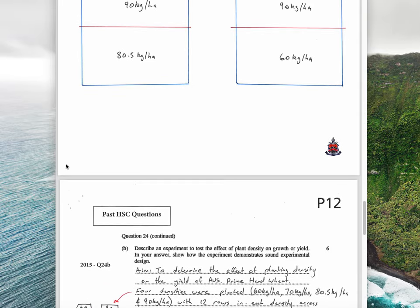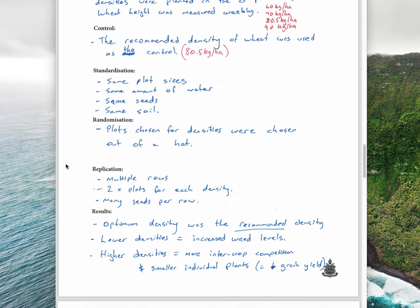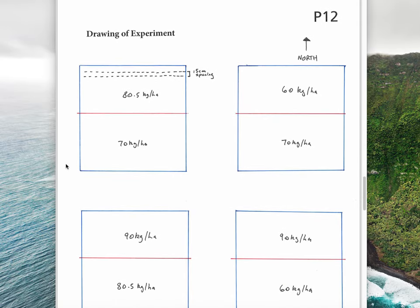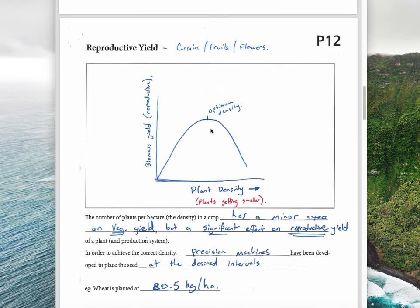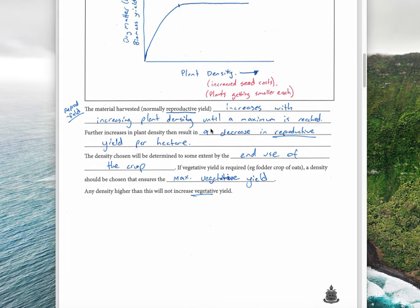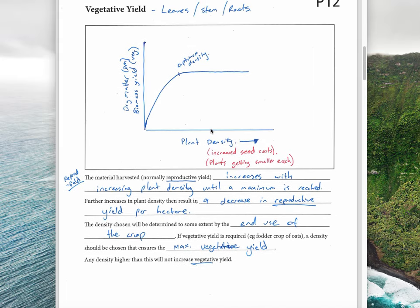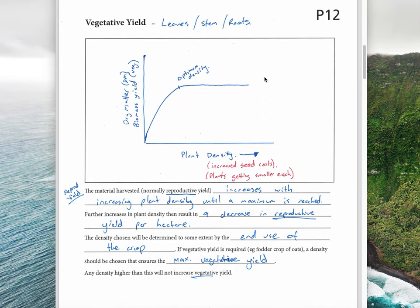Because the experiment was ultimately trying to harvest wheat grain, it would have been reproductive yield. However, we measured the leaf area because we didn't let it go to grain, so we were measuring the vegetative yield.